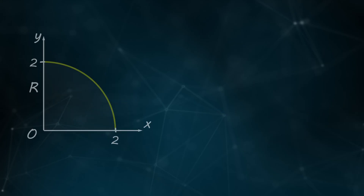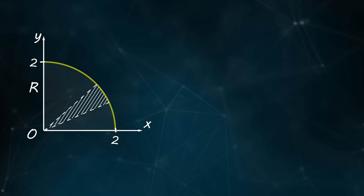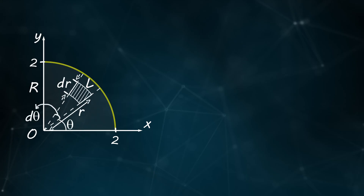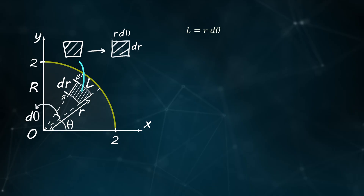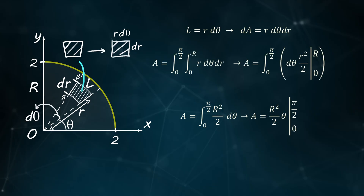Now we compute the area of a quarter circle. Since the boundary is circular, we use polar coordinates. We sum rectangle areas from center to radius, then over the full angle range. A circular element at distance r from the center and angle θ to the axis is treated as a rectangle, with arc length as one side. Integrating from center to radius and from zero to the angular limit, and substituting numerical values, the area is π square units.